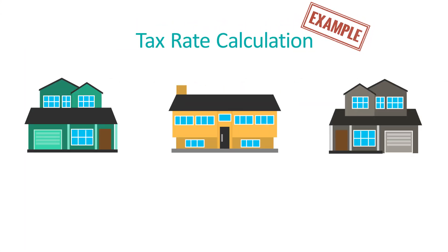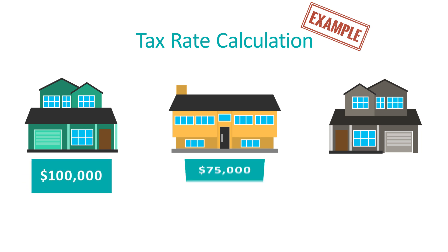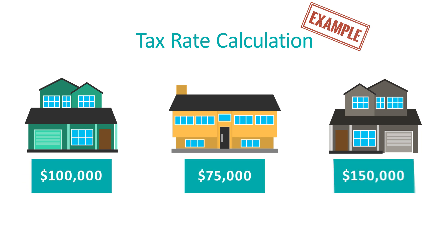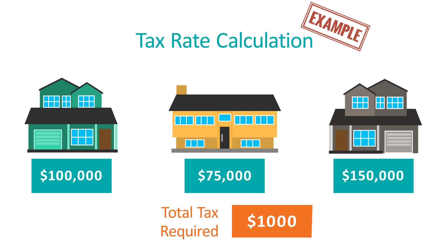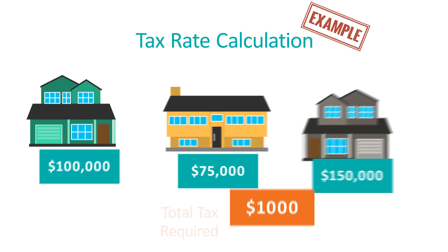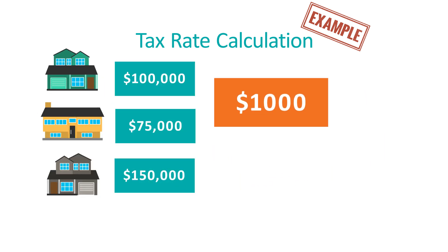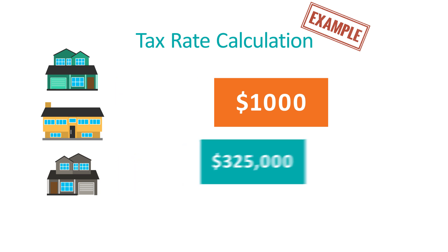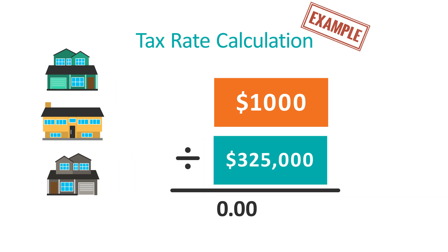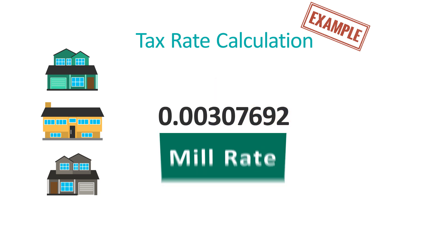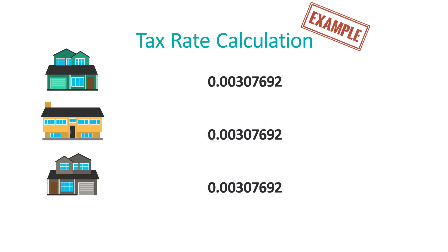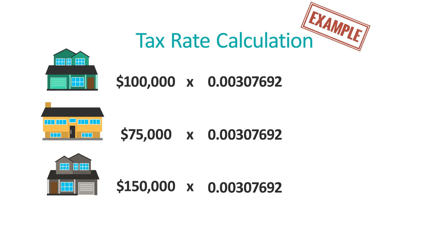Here's an example of how the rate is calculated. Let's say Vernon was a town of three residential houses: Property 1 assessed at $100,000, Property 2 at $75,000, and Property 3 at $150,000. Let's assume the City of Vernon needed $1,000 to balance the budget. We take $1,000 divided by the total value of all properties, which equals 0.00307692 — what we call the mill rate.